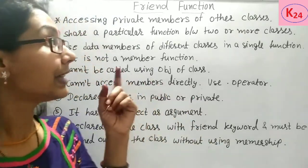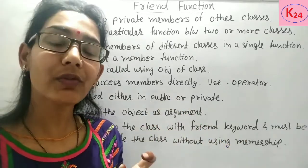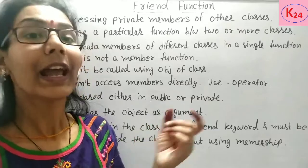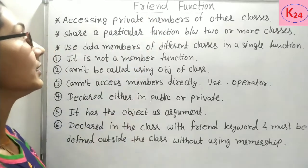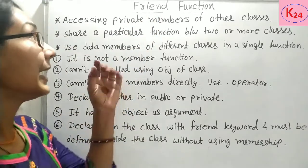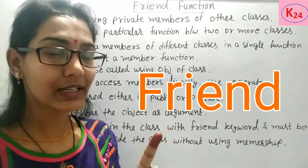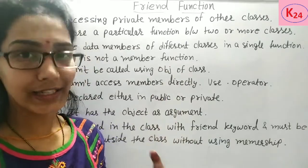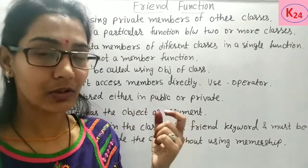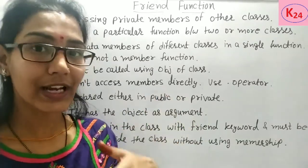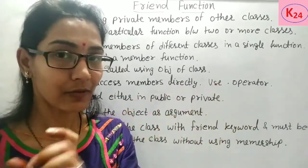Note that the friend function cannot access private members directly — we have to use the dot operator for accessing the private data members of a different class. The friend function is declared with the keyword 'friend' within the class, but it must be defined outside the class without using the membership operator. When using normal member functions outside the class, we use the scope resolution operator and class name, but not with friend functions.